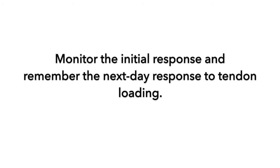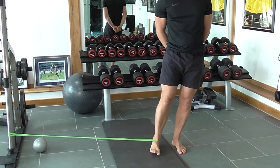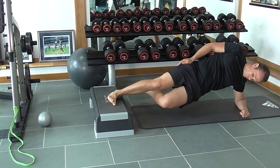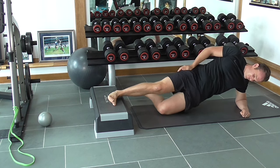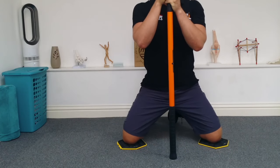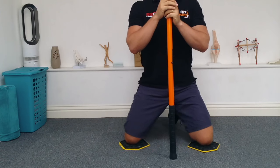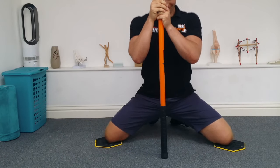Once rehabilitation is underway, it's important to monitor the initial response to loading exercises. Tendons often have a delayed response, so it's not until the next day that you can gauge the outcome from the previous day's exercises. Here are some progressions for adductor isolation exercises — the adductor side plank is particularly challenging. I'm also a fan of slide discs for adductor exercises, though you need to be careful not to stretch too far and cause another injury. Using a stick placed centrally helps take some body weight to control the lowering and avoid getting stuck in the splits position.